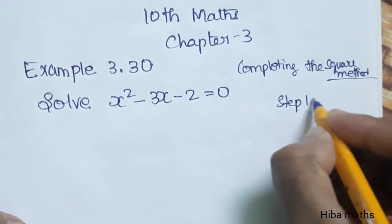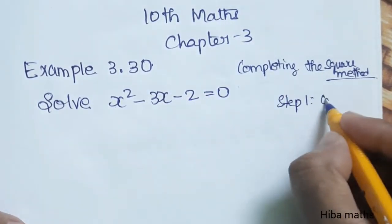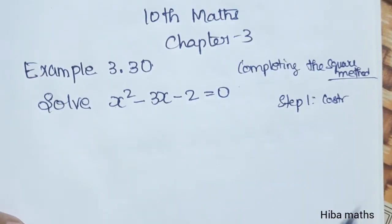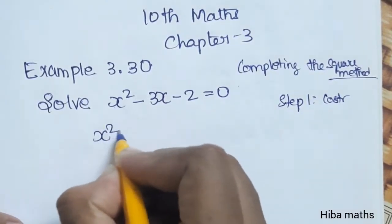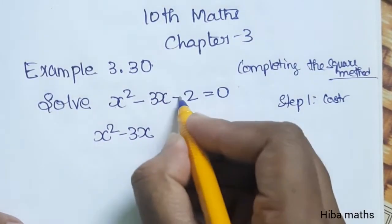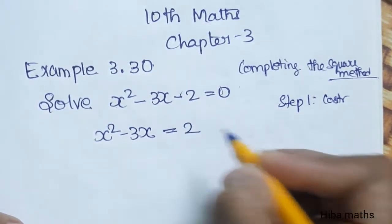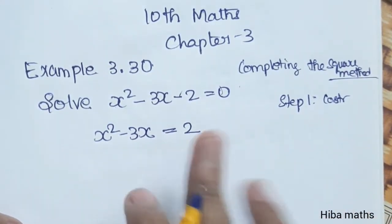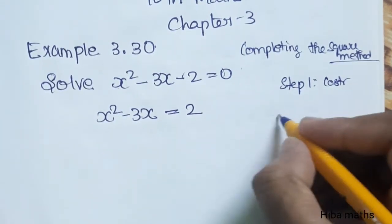Step 1 is moving the constant to the other side. The first step is constant, so x² - 3x - 2, we move it to the other side and plus 2. This is step 1.